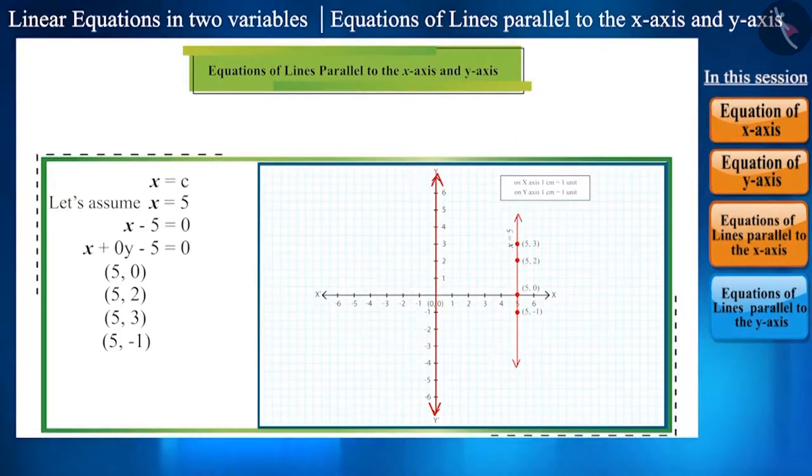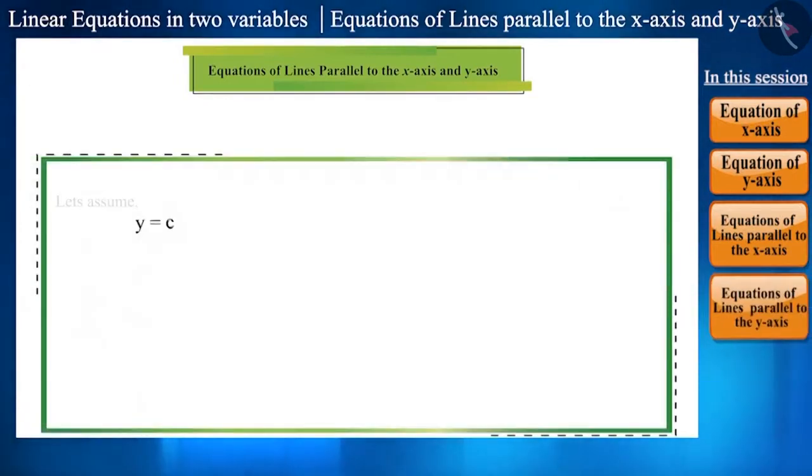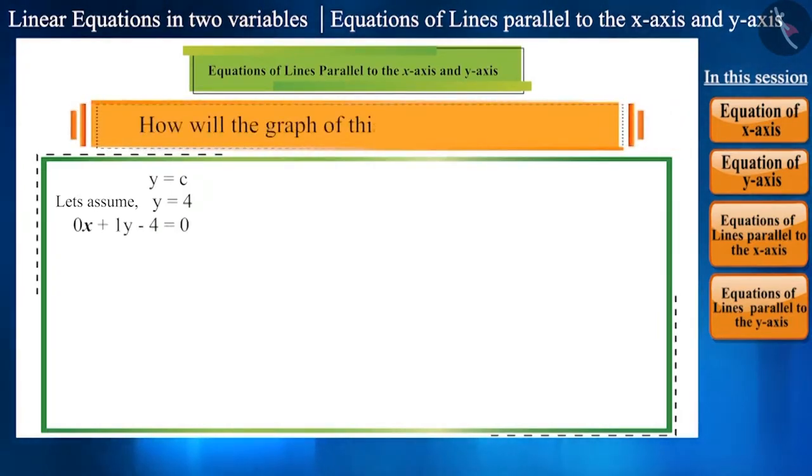Friends, one point to be noticed here is that all the solutions are in the form of 5, n here. n is a real number. Now, let's assume the value of y as 4 and also write it in the form of linear equations in two variables as 0 multiplied by x plus 1y minus 4 is equal to 0. Can you tell how will the graph of this equation look like?